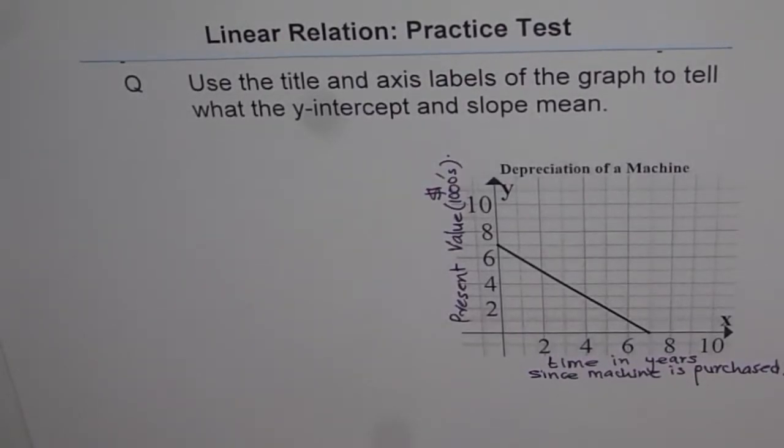Let's analyze the given graph and then write about this linear relation. The question is, use the title and axis labels of the graph to tell what the y-intercept and slope mean.